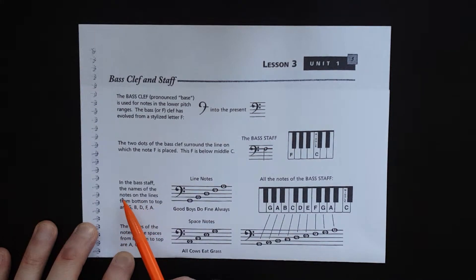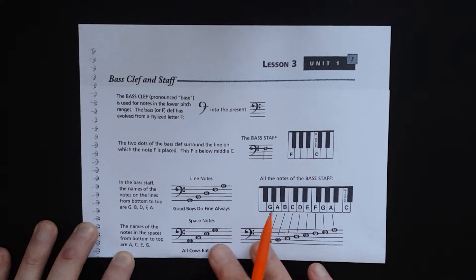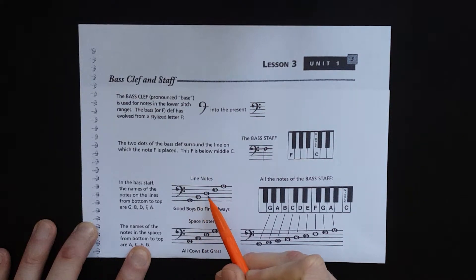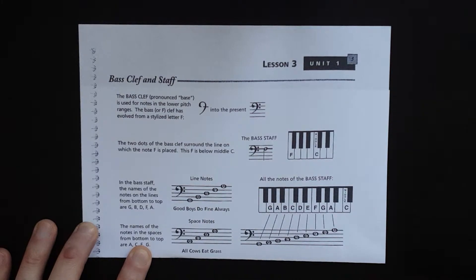In the bass staff, the names of the notes on the lines from bottom to top are G-B-D-F-A. In the book it says 'Good Boys Do Fine Always,' but I feel like that gets mixed up with 'Every Good Boy Does Fine' a lot. My class came up with 'Grandma Buys Dresses For All,' and I've just always used that since then.